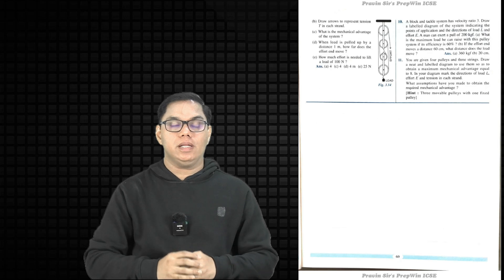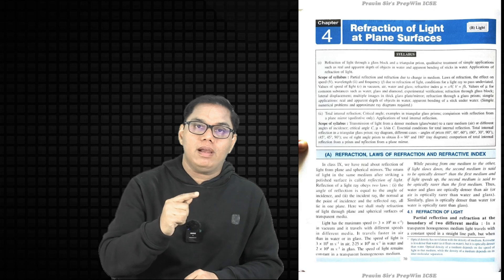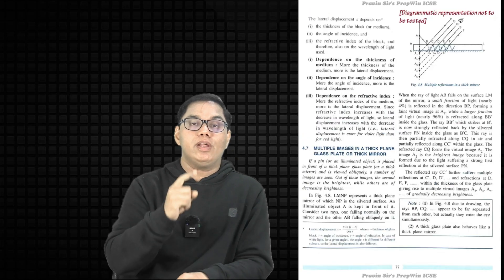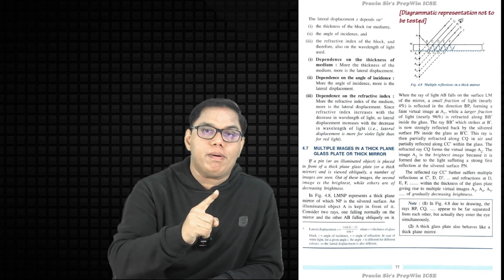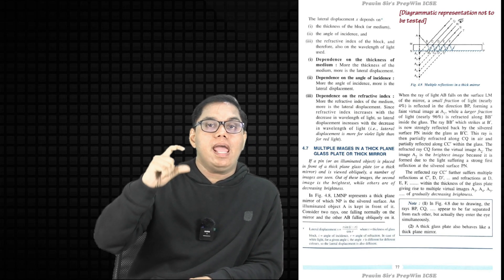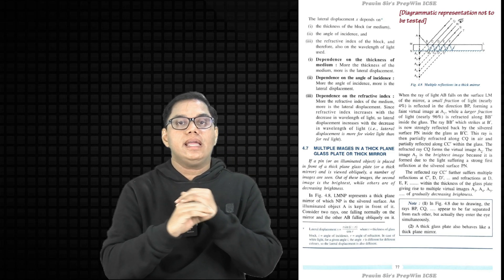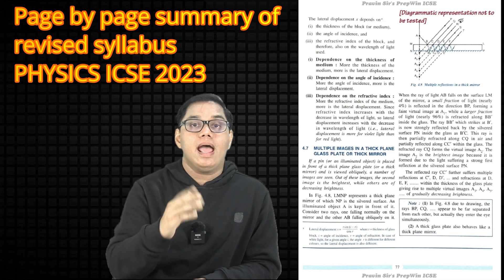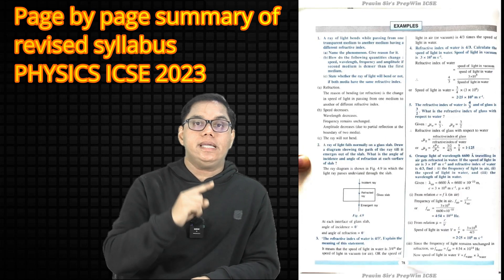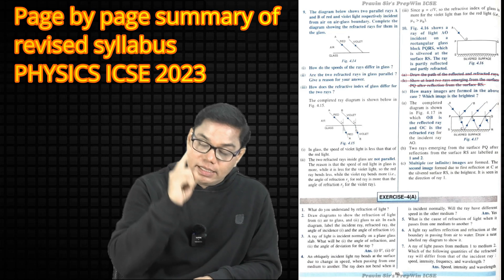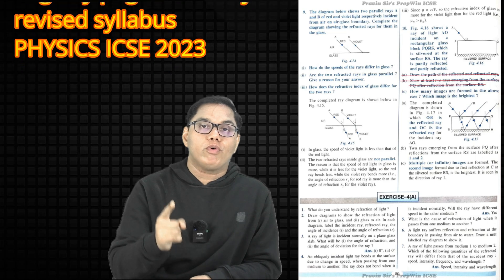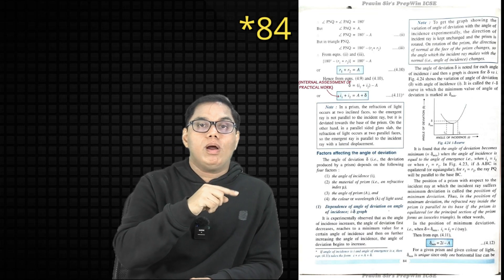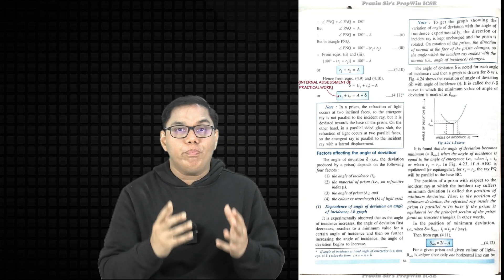Moving to Chapter 4 Refraction of Light at the Plane Surface — there is a minor change. On page 77, the diagrammatic representation of multiple images formed when a thick glass plane or thick mirror is used is out of the syllabus. You only need to learn which of the multiple images formed is the brightest and the reason for the same. On page 80, Question 10 parts a and b are omitted. On page 81, the derivation i1 plus i2 equals a plus delta is included for your internal assessment and practical work.